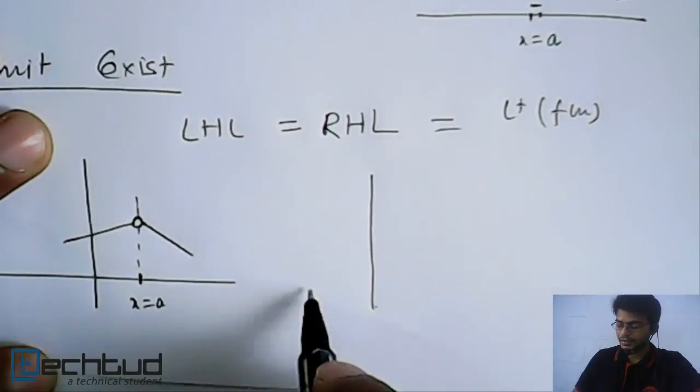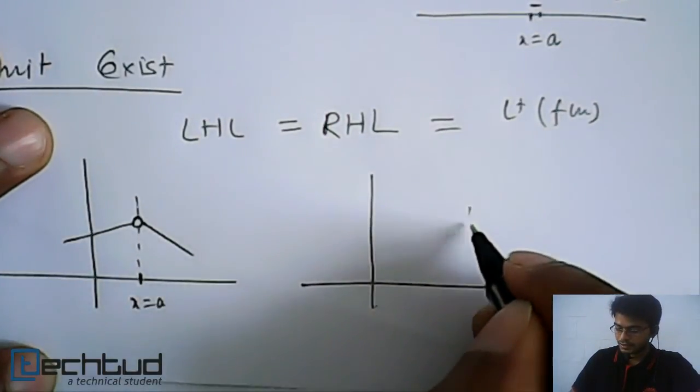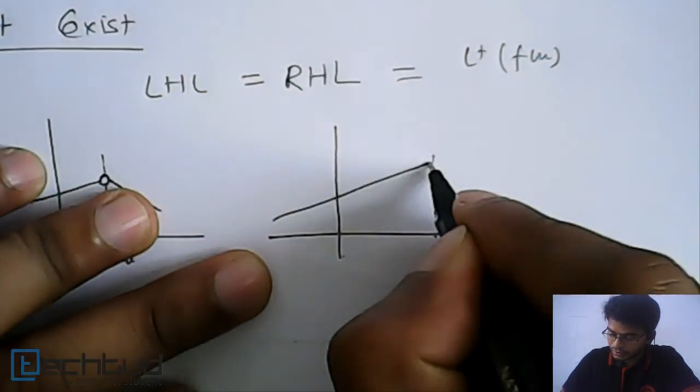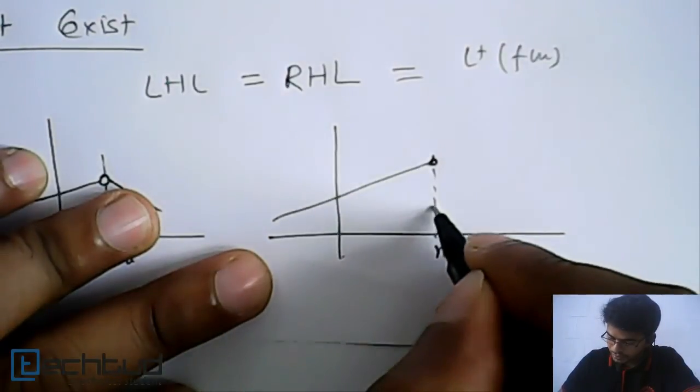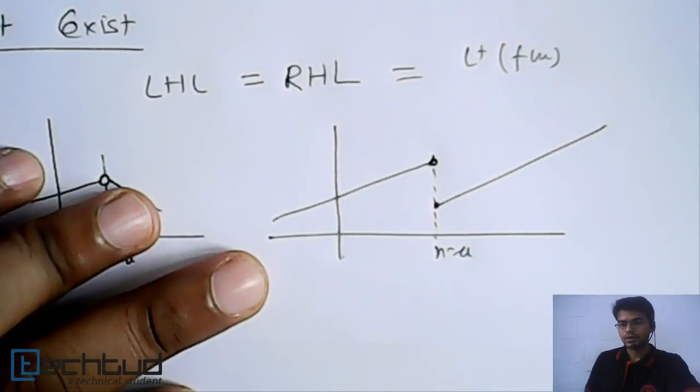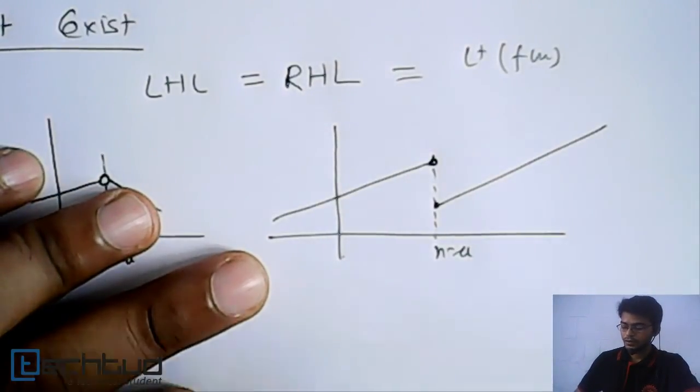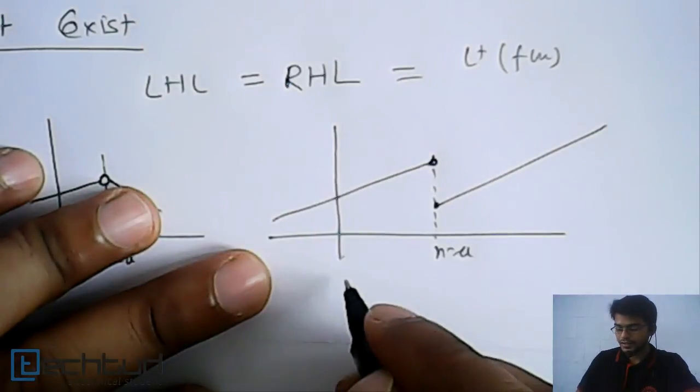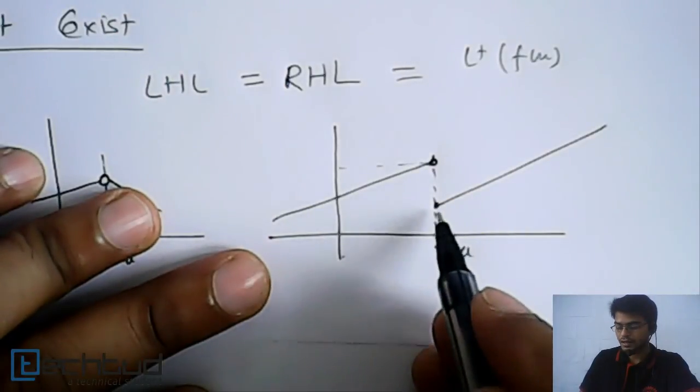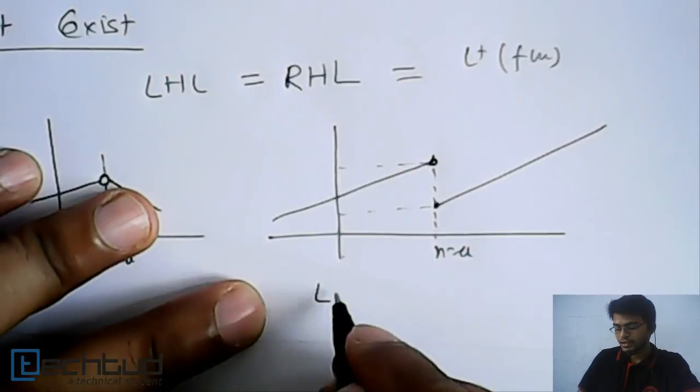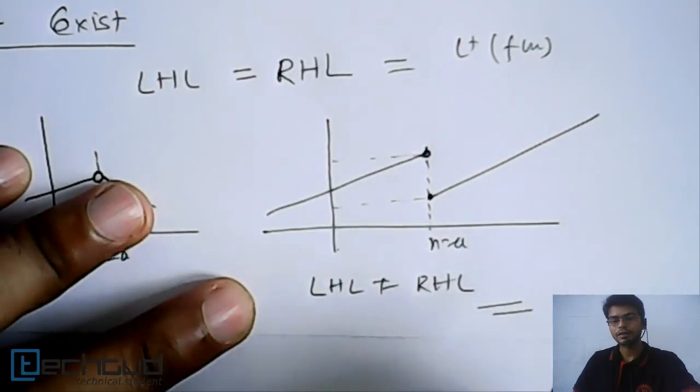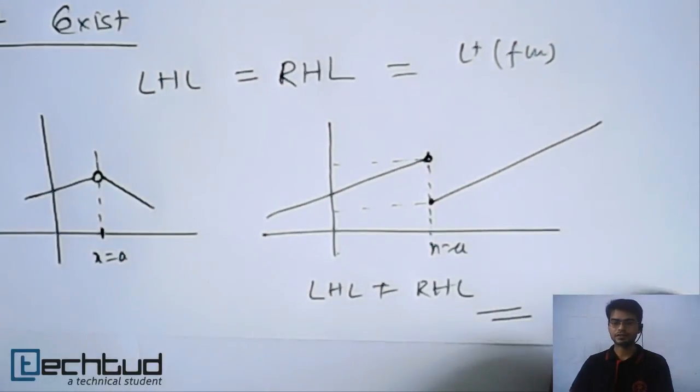But at the other hand, if a function has something like at x equal to a, the curve like function comes here, here the value doesn't exist, and it starts from here. So in this case, when you find LHL, it will come out to be a value nearby here. But if you find RHL, it will come out to be this. So LHL will not be equal to RHL, and hence we will say that the limit of this function doesn't exist.